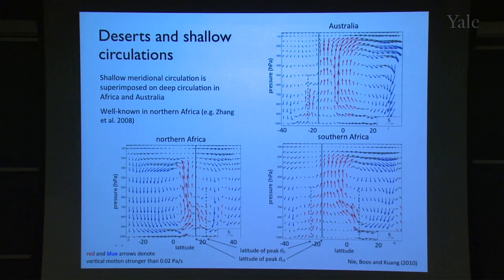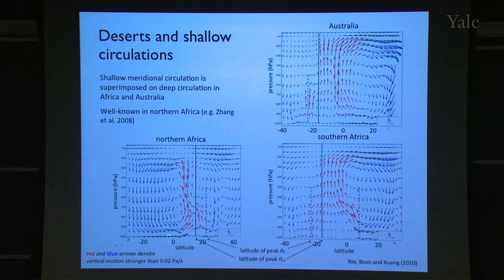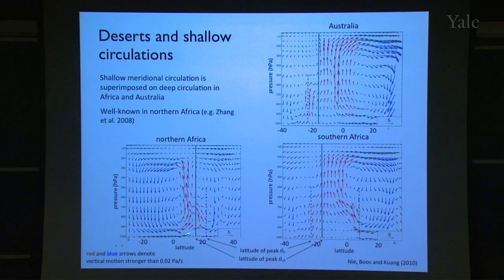This plot shows the circulation in a vertical plane over three different monsoon regions. For Northern Africa, the summer pole is on the right, pressure on the vertical axis. Red vectors denote strong upward motion, blue vectors strong downward motion. This deep tropospheric overturning circulation is the canonical monsoon overturning cell. The black line represents where the boundary layer θE maximum is, serving as the poleward limit of the strong thermally direct monsoon circulation. But there is also a shallow branch of ascent located poleward of the deep branch.